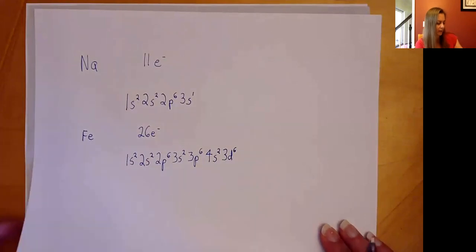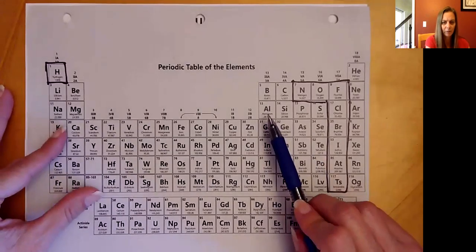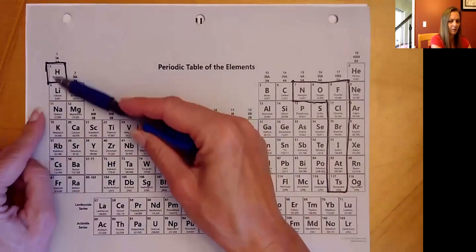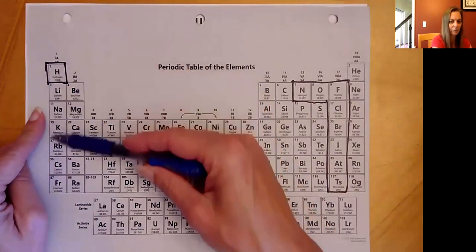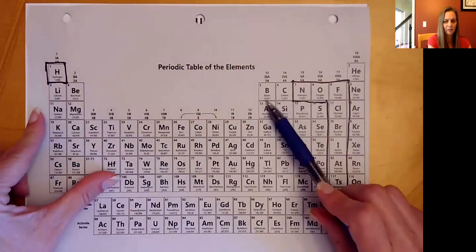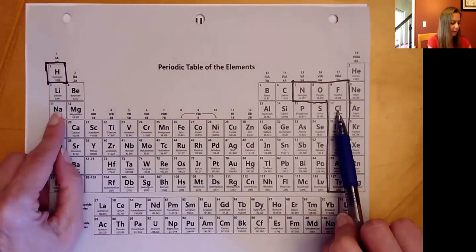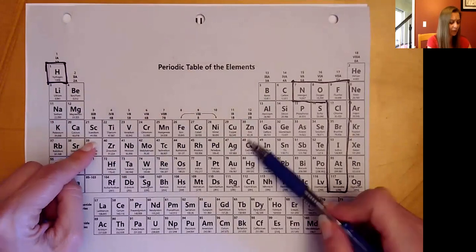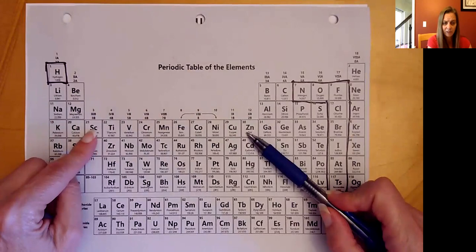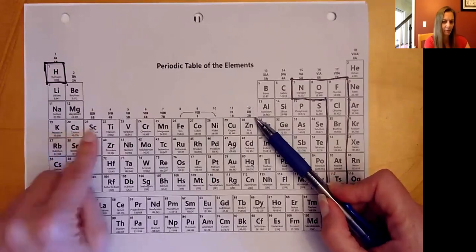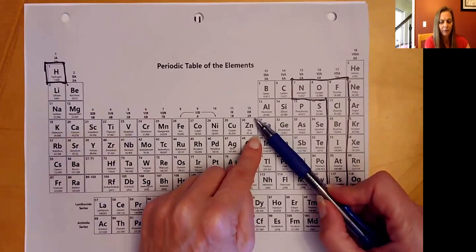You might wonder how to know that the filling order goes 3p, 4s, 3d. Looking at the periodic table: the s orbital columns can hold 2 electrons, the p orbital columns hold 6, and the d orbital block has 10 columns. Although the d orbitals start at energy level 3, they appear on a lower row of the table — so these are the 4s columns and these are the 3d block. We can follow the periodic table to tell us the order of filling.